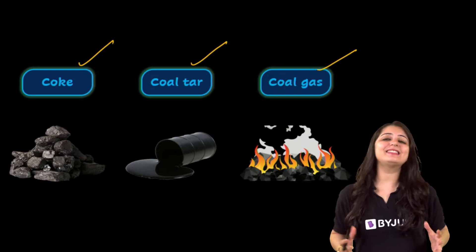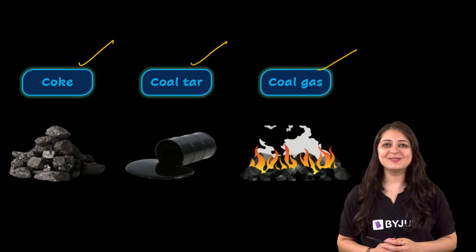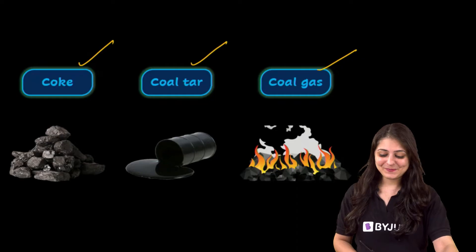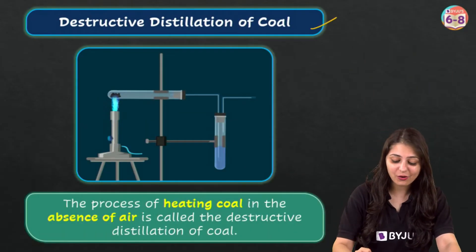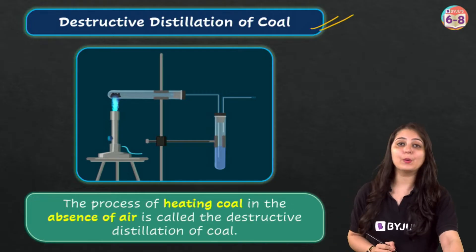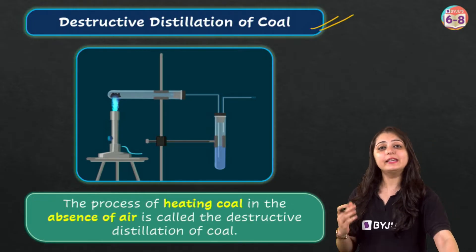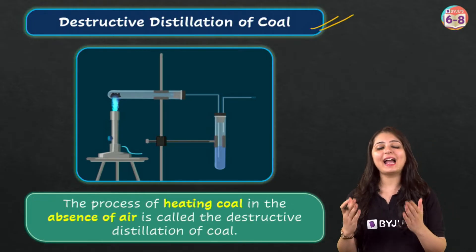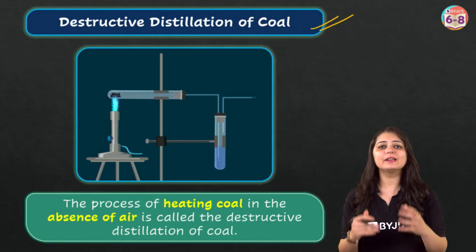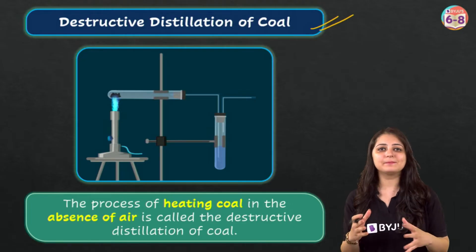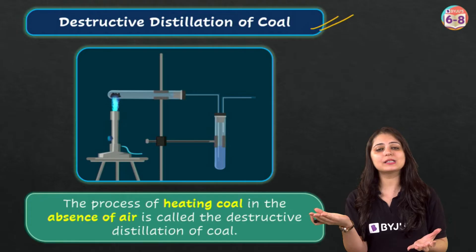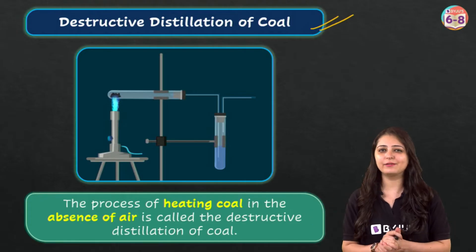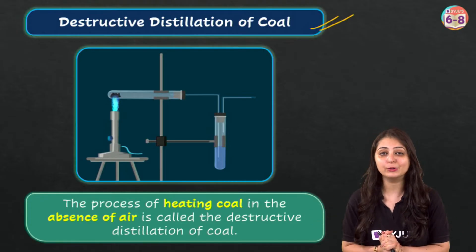How do we get these products? By the process of destructive distillation of coal. It's a process of heating coal in the absence of air. When coal is burned in the presence of air, it burns to produce carbon dioxide with no other products of value.